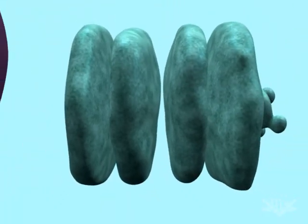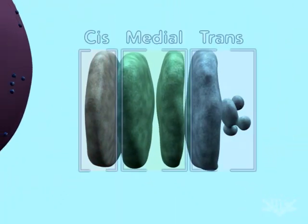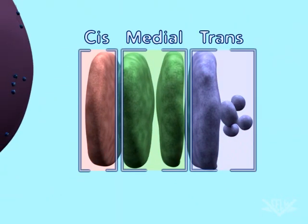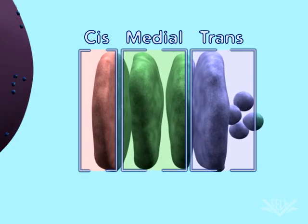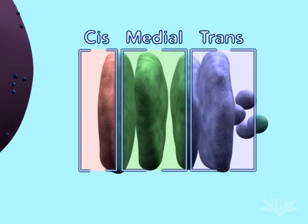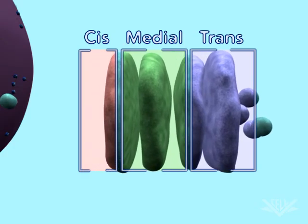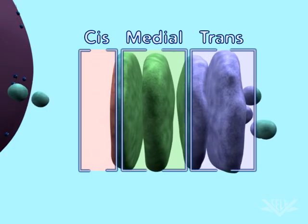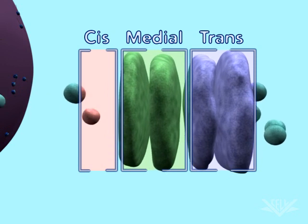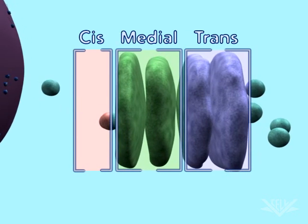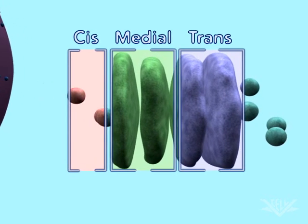So, how does the protein move through the Golgi? Movement occurs in waves. First, the cis-cisterna becomes part of the medial Golgi cisternae. Behind it, a new cis-cisterna is formed by the fusion of vesicles from the ER.